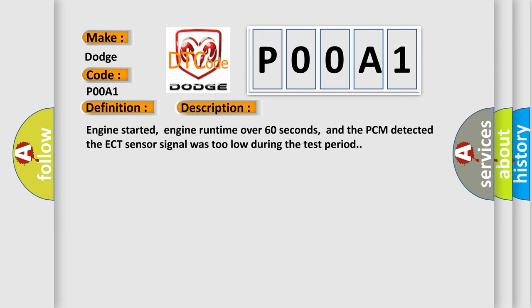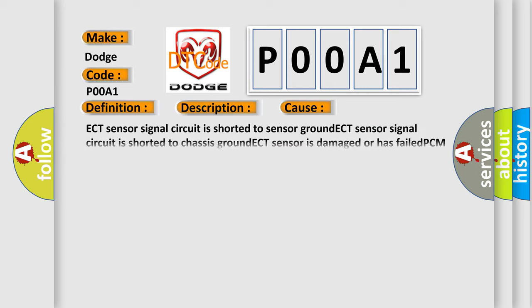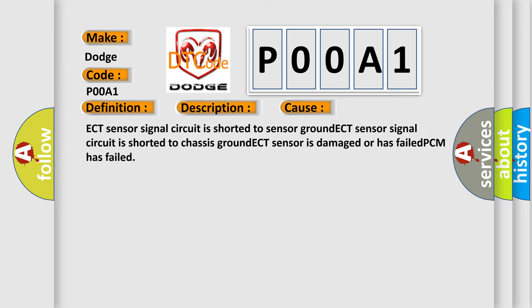Engine started, engine runtime over 60 seconds, and the PCM detected the ECT sensor signal was too low during the test period. This diagnostic error occurs most often in these cases: ECT sensor signal circuit is shorted to sensor ground, ECT sensor signal circuit is shorted to chassis ground, ECT sensor is damaged or has failed, or PCM has failed.